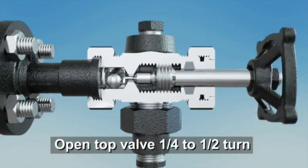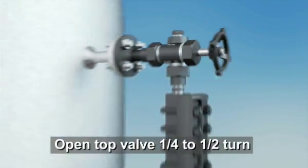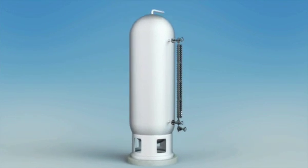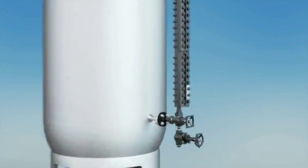The first step is to open the top valve one quarter to one half turn. It's always best practice when commissioning any Jurgason level product to open the top valve first.